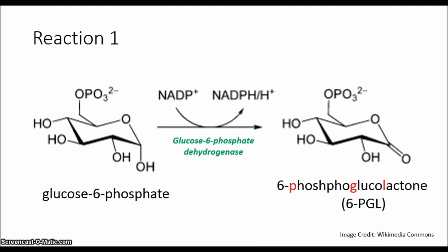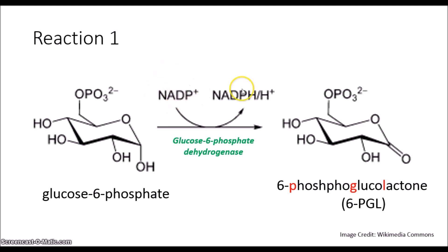Reaction 1: glucose 6-phosphate with the enzyme glucose 6-phosphate dehydrogenase is going to make 6-phosphoglycolactone, abbreviated as 6-PGL. What's essentially happening is that carbon 1 of the glucose sugar is becoming a carbonyl group, making this an ester. So we have created an ester bond here, which is going to have a big impact on the reaction. Notice that we have used NADP+ to generate 1 NADPH.